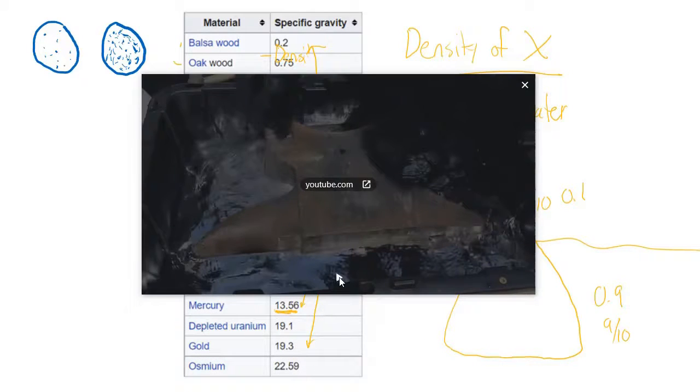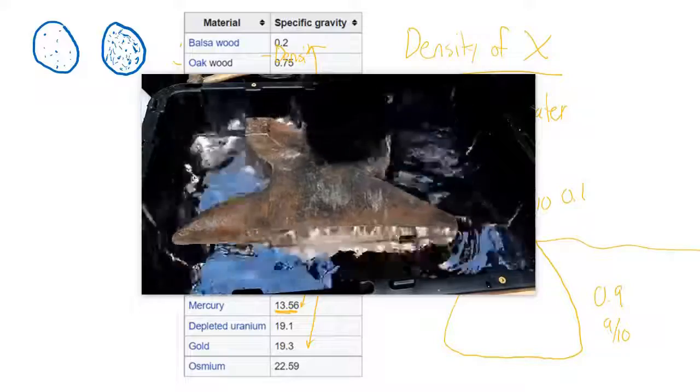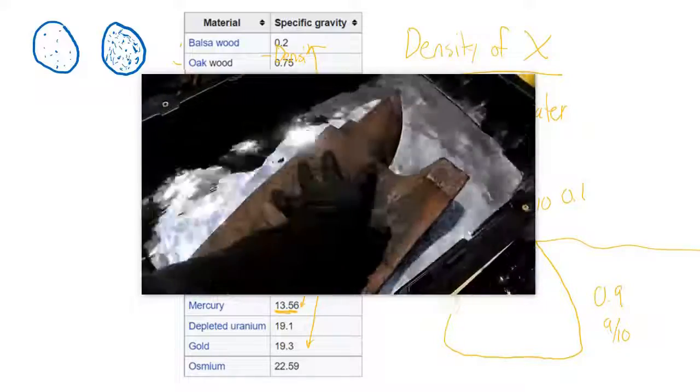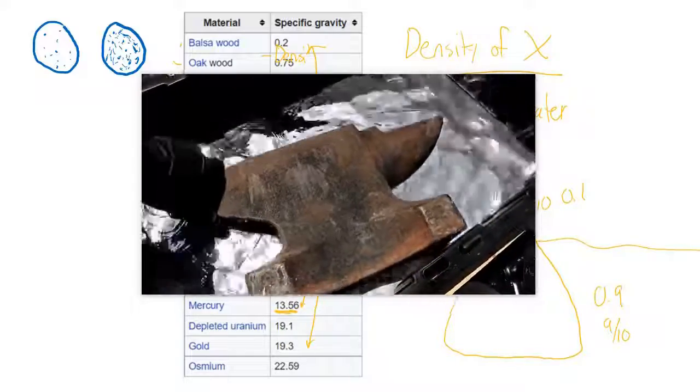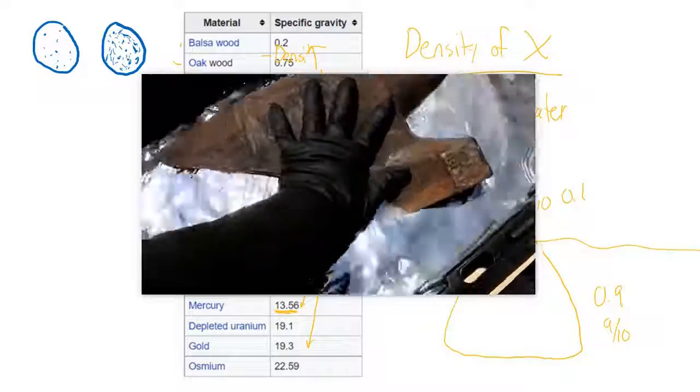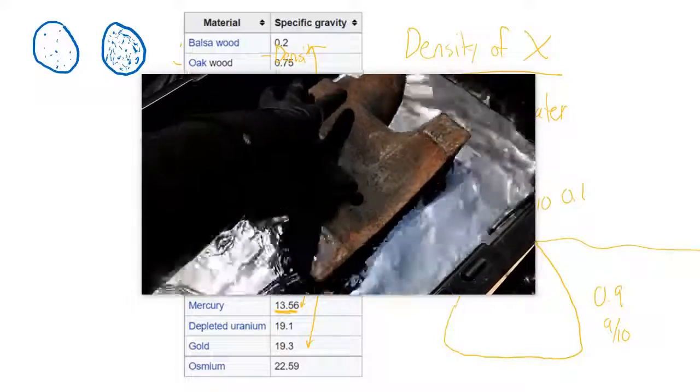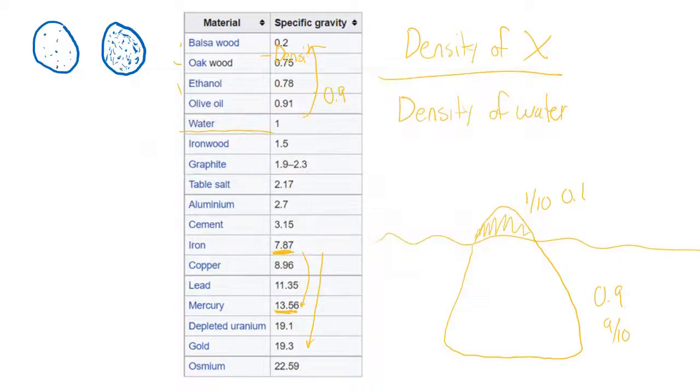And people have done this experiment before. So this is somebody who did the experiment. He took an iron anvil and dropped it in liquid mercury. So even though iron is very heavy and very dense, it floats quite well, you can see. So that is an interesting application of specific gravity and the concept of density.